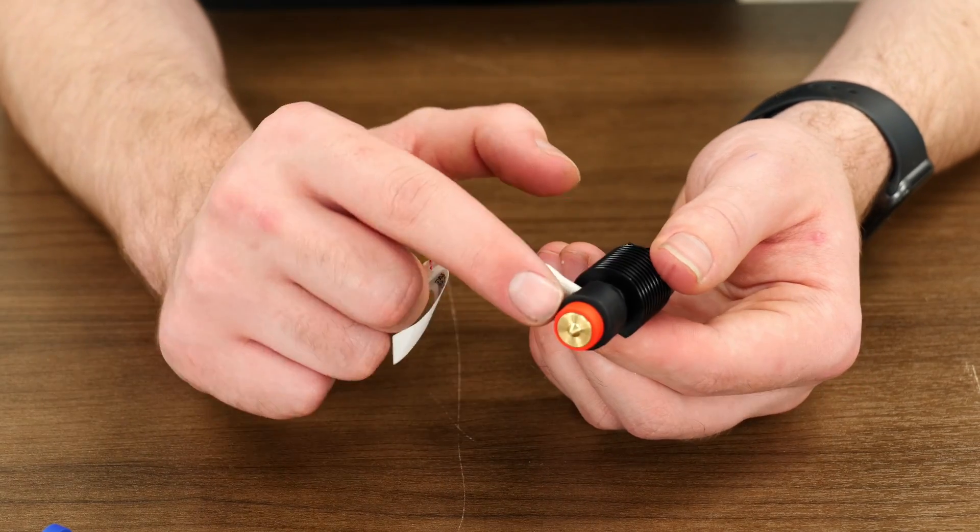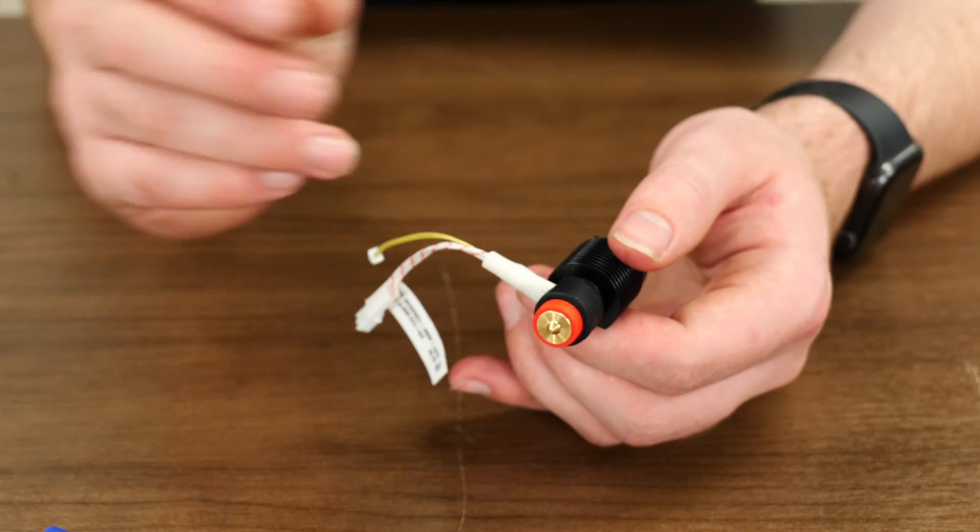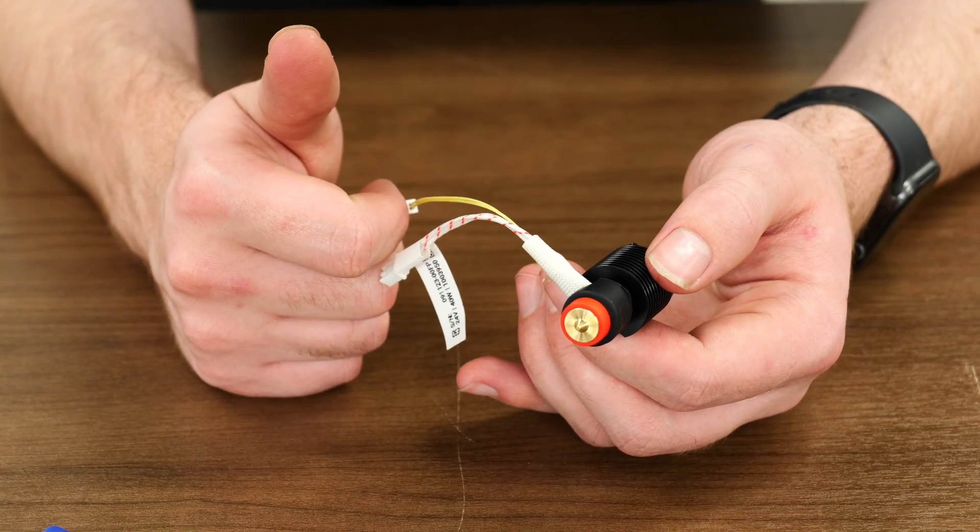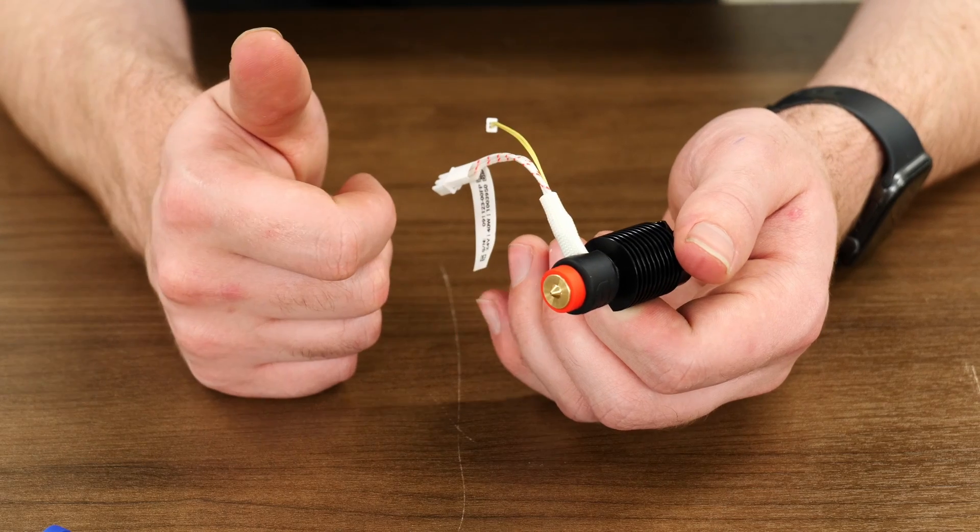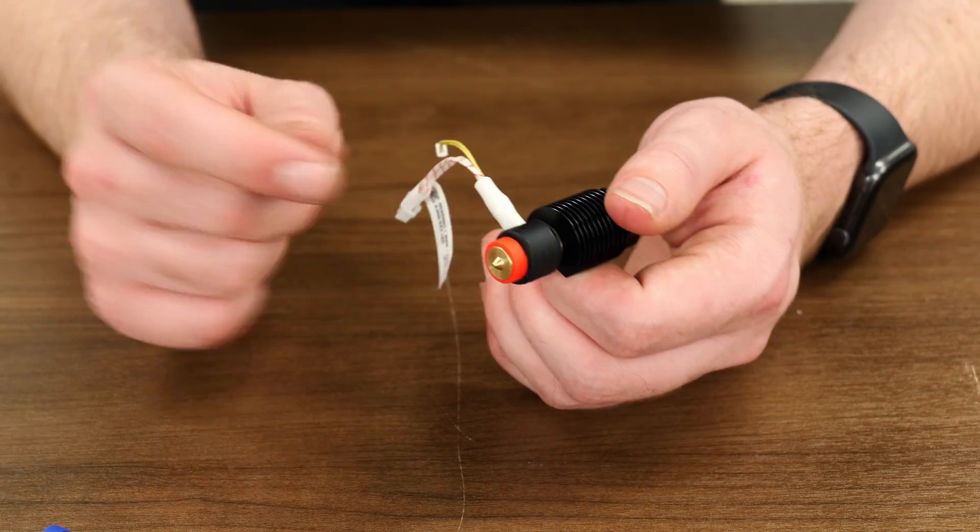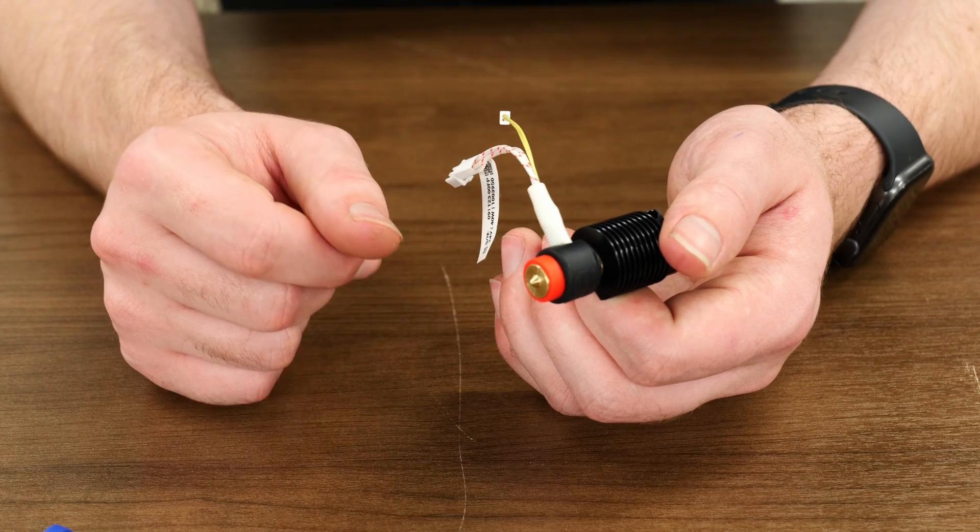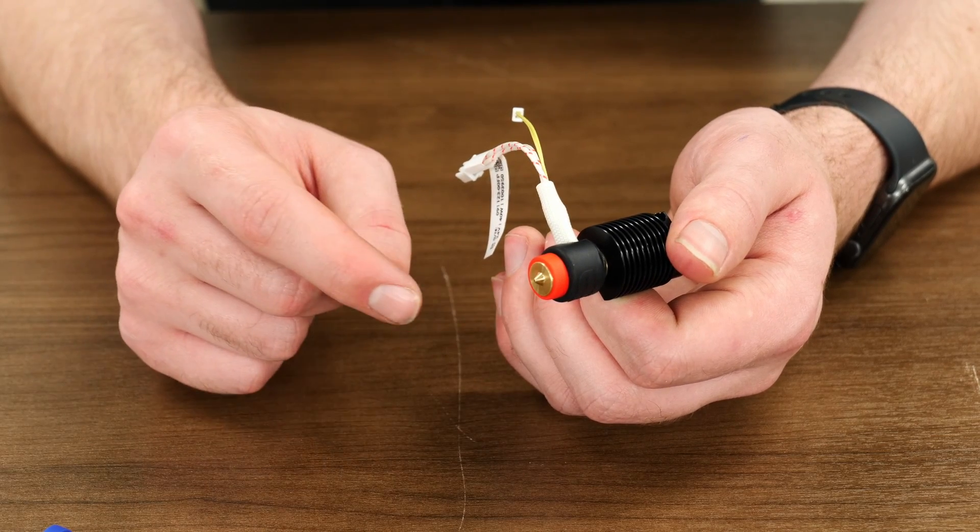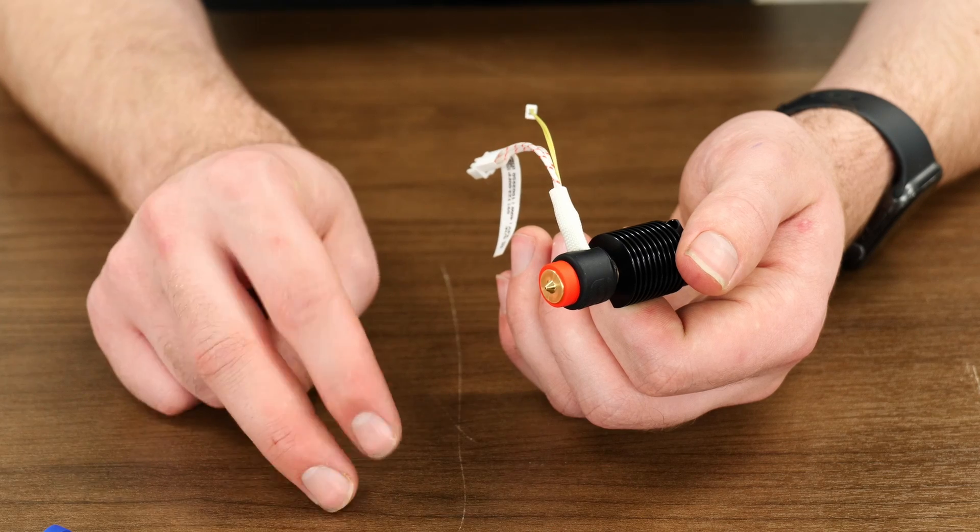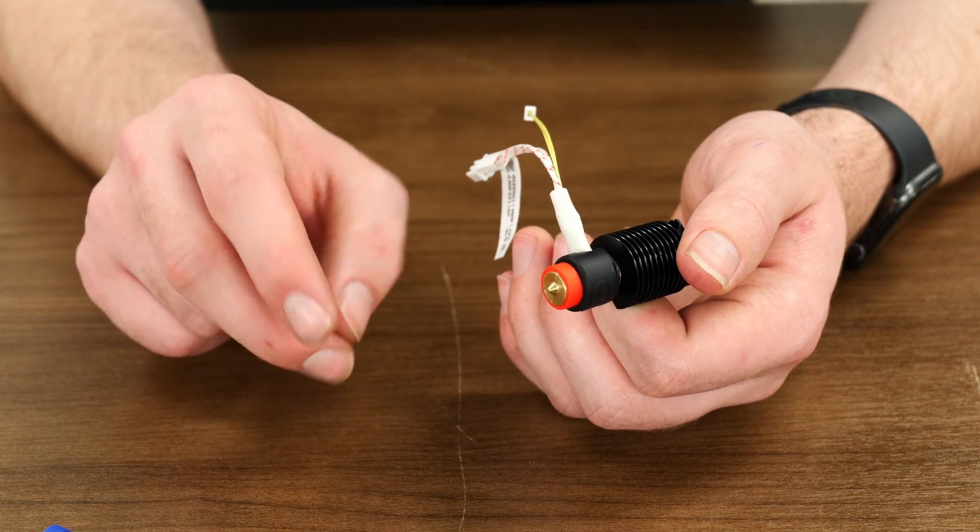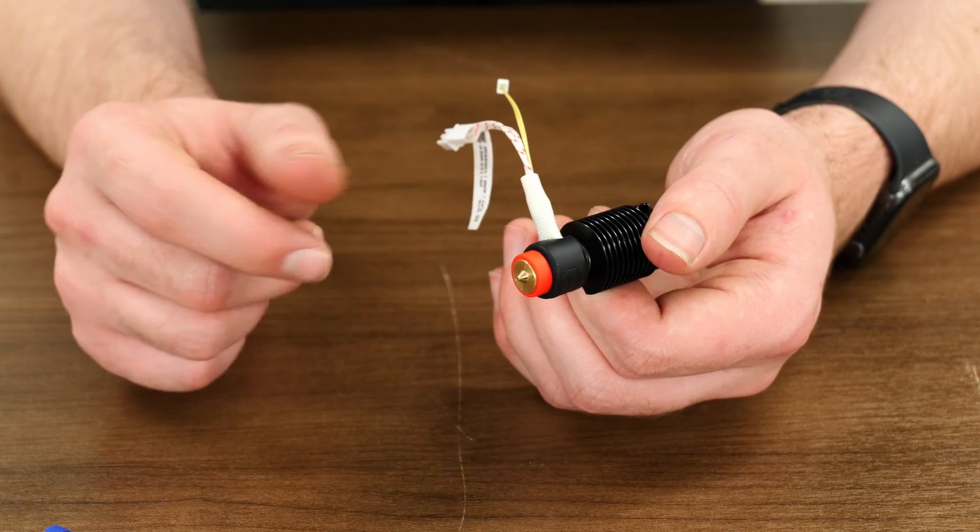Another nice thing about these is that these Revo nozzles come in all sorts of different configurations. So you can get high flow, which is partnered with Bondtech. So you get essentially a CHT version of this with the three boreholes in it. You can get hardened steel versions. You can get stainless steel versions. You can get very abrasive resistance versions. You can get the Obsidian X ones, you can get basically anything you need in these and they're all cross compatible.